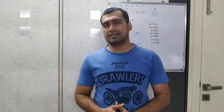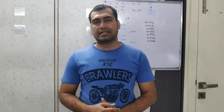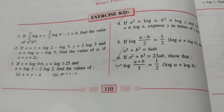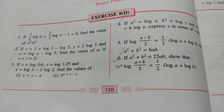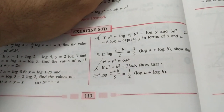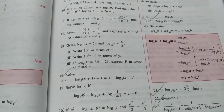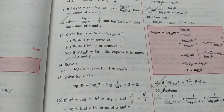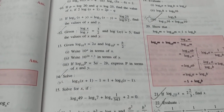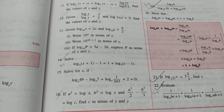Hi students, this is AJ Sir. Let's study 9th Standard ICSE Math, Exercise 8D. In this exercise, mark the following sums as IMP: the 6th sum, 14th, 19.3, and the 22nd sum.